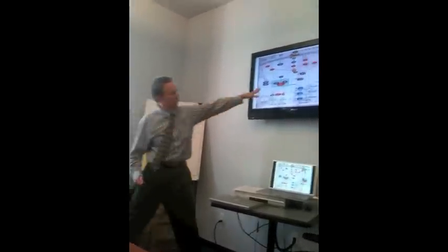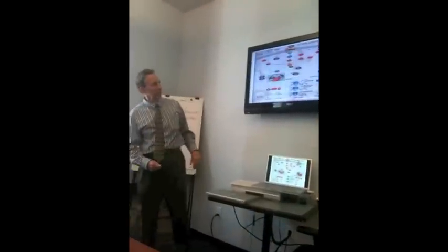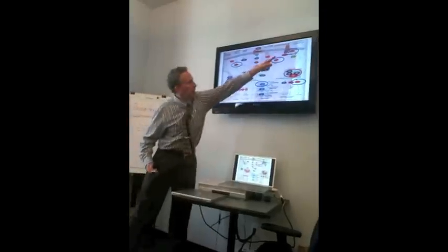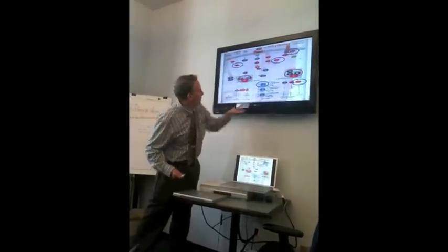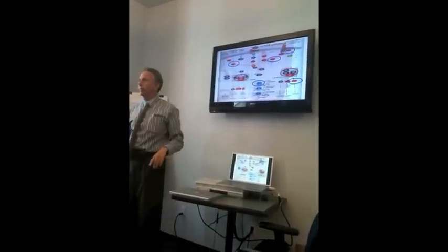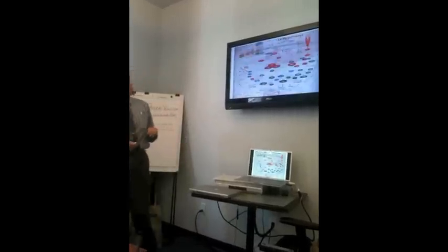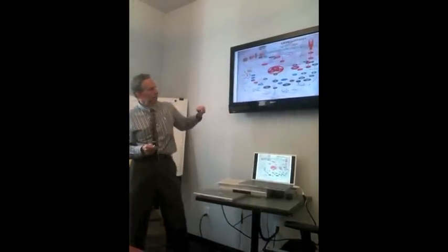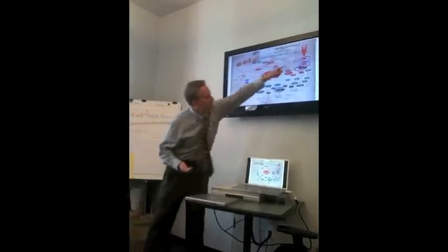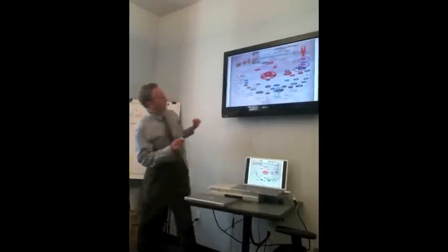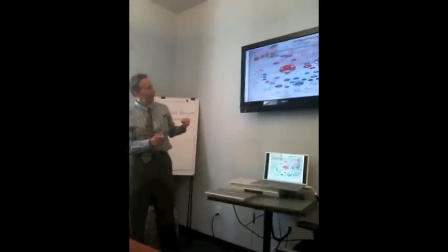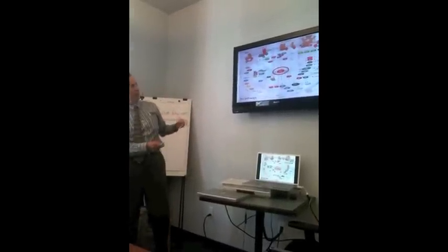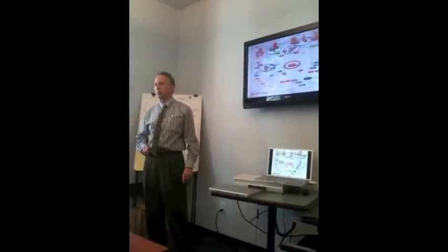Notice that mTOR occupies a central position, but in the periphery of the mTOR pathways are PI3K-AKT, AMPK, IGF-1-alpha, and all these other things. If you look at the AMPK pathway, it's in the center, but PI3K-AKT and IGF-1-alpha are in its periphery. Similarly, looking at the AKT pathway, all these other things are in its periphery.